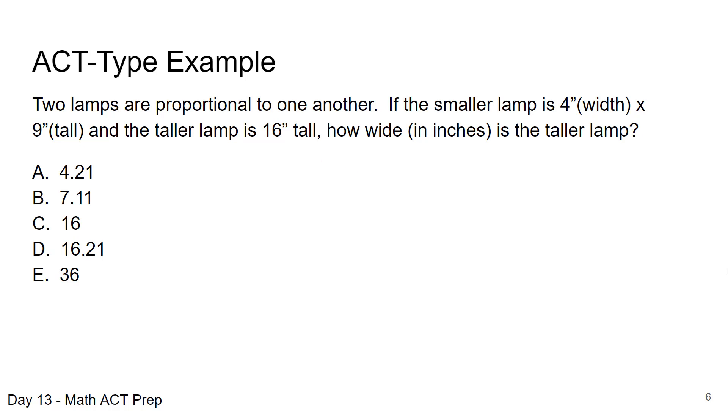One way we can set up the proportion is we can set up the widths on the left-hand side and the heights on the right-hand side. We have the smaller width of four over our unknown x, and we set that equal in proportion to nine over 16, which is the heights of the smaller over the larger. We'll cross multiply and we get 9x equals four times 16. When we simplify, we get x is equal to 7.11 inches. Answer choice B.